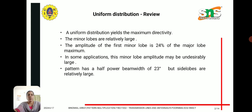First, the uniform distribution array yields the maximum directivity, but the disadvantage is that the minor lobes are relatively large. The amplitude of the first minor lobe is 24% of the major lobe maximum, which in some applications may be undesirably large. The pattern has a half power beam width of 23 degrees, but side lobes are relatively large.